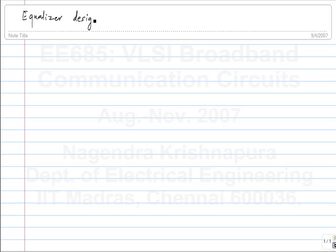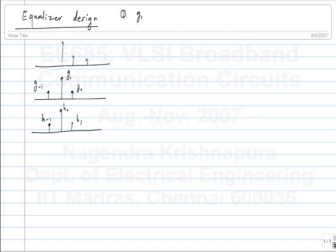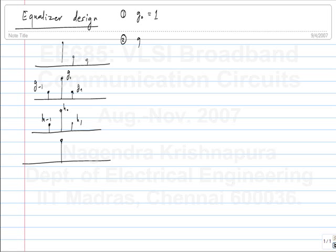You want to design the equalizer. What is the length of the equalizer? You have G0, G1, and G-1. You have to choose one of them to be fixed. Let's say first you choose G0 to be one, just arbitrarily. Then in the equalized channel your cursor will be G0·H0 plus this whole thing, so you will get some particular value of the cursor. Secondly, you can choose G0 such that the cursor in the equalized channel is one.